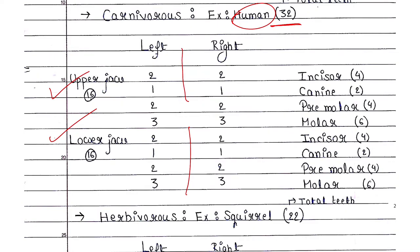In the upper jaw there are incisors, canines, premolars and molars. There are four incisors — two on the left and two on the right. Two canines — one on the left and one on the right. Four premolars — two on the left and two on the right. And six molars — three on the left and three on the right. So total: four plus two plus four plus six equals sixteen teeth in the upper jaw.